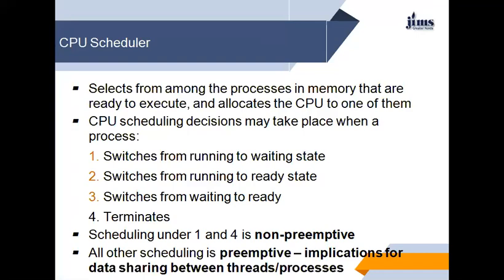The CPU scheduler selects from among the processes in memory that are ready to execute and allocates the CPU to one of them. CPU scheduling decisions may take place when a process switches from running to waiting state, switches from running to ready state, switches from waiting to ready state, or when the process terminates. Scheduling under conditions 1 and 4 is non-preemptive.